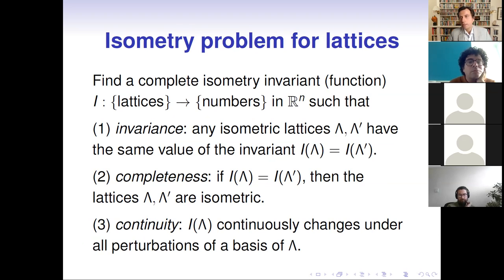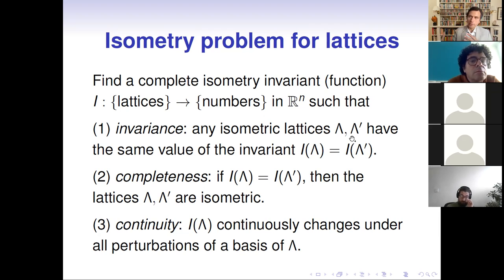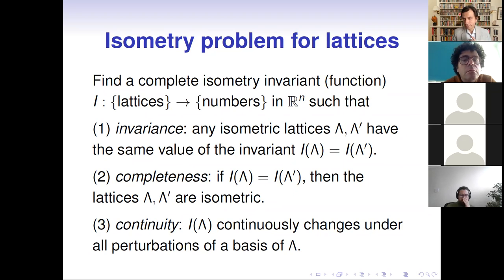We are looking for a complete isometry invariant, which is a function from lattices to some numbers. This problem makes sense in any dimensional space. We would like this function to be invariant, complete, and ideally continuous. Invariance means that any isometric lattices have the same value: if lambda and lambda-dash are isometric, related by rigid motion or reflection, then the invariant should take the same value. Completeness means that if an invariant takes the same value on two lattices, those lattices should be isometric.